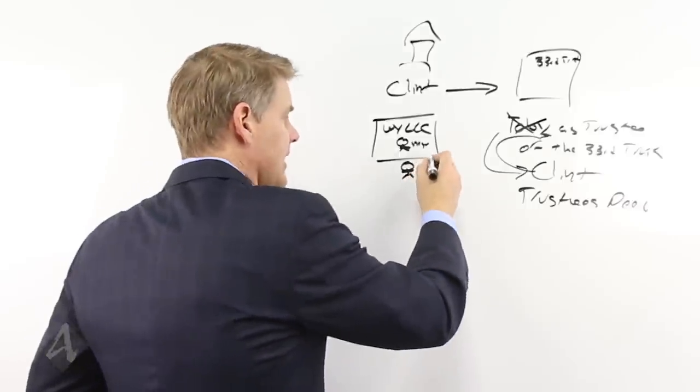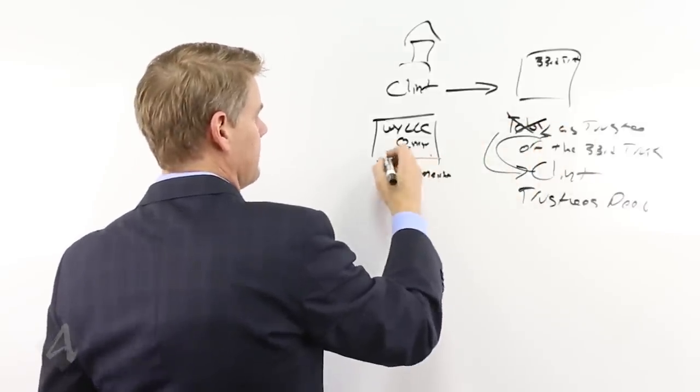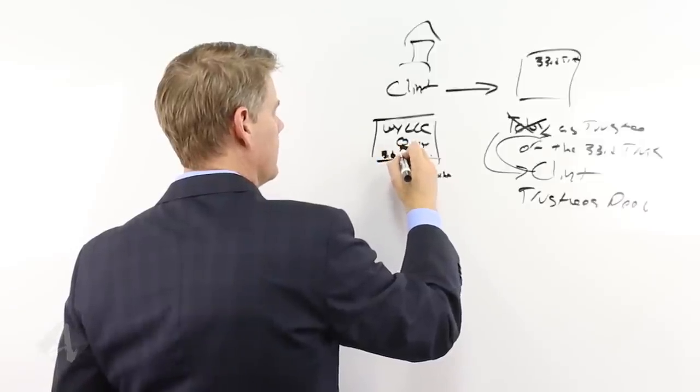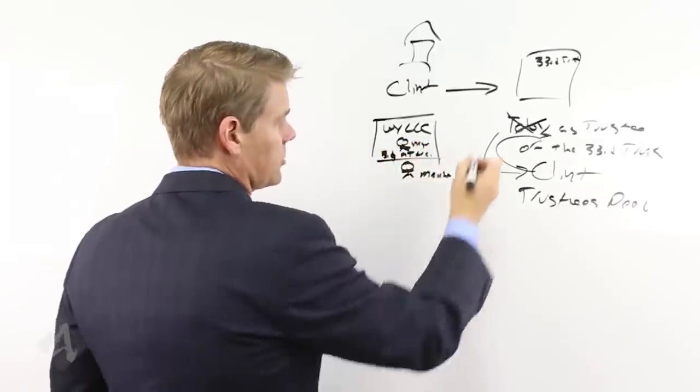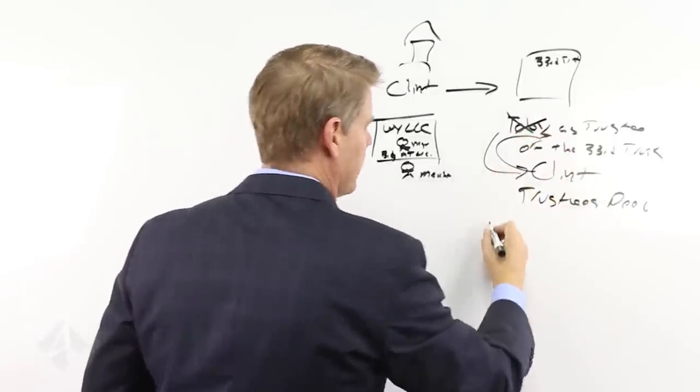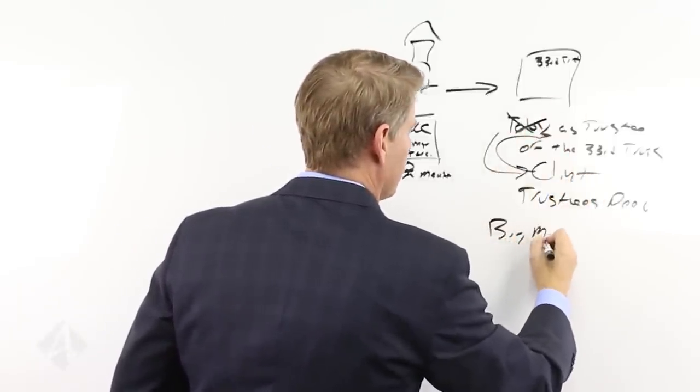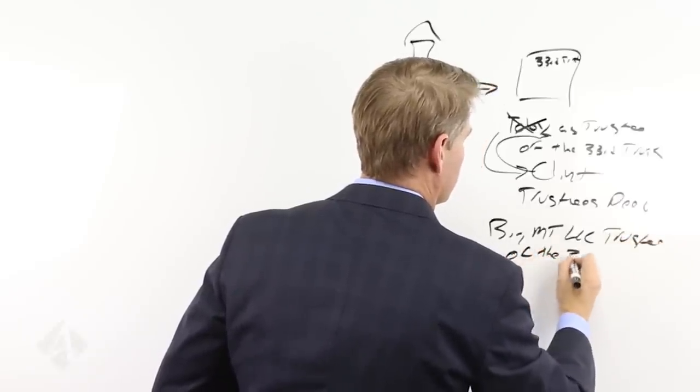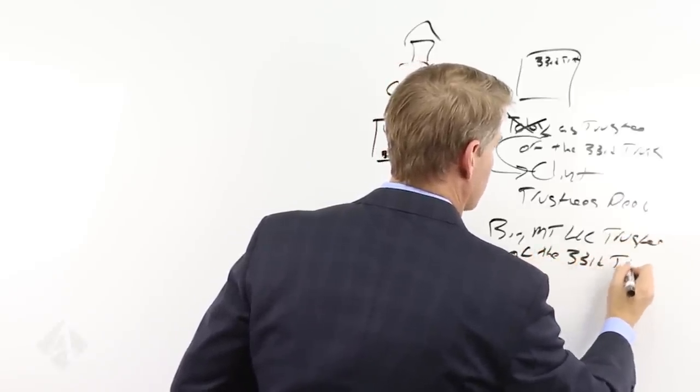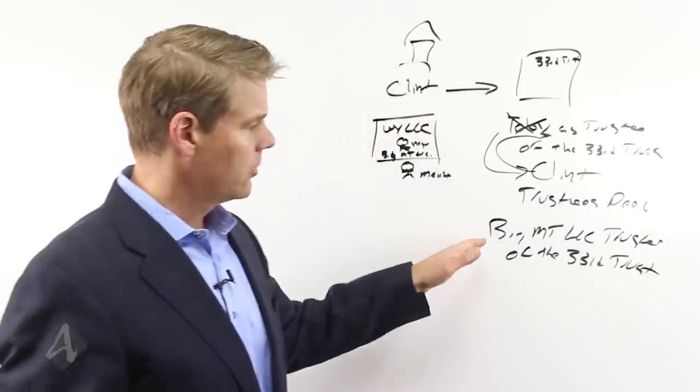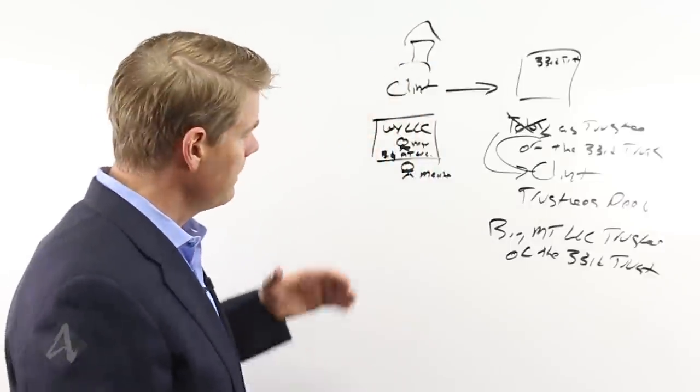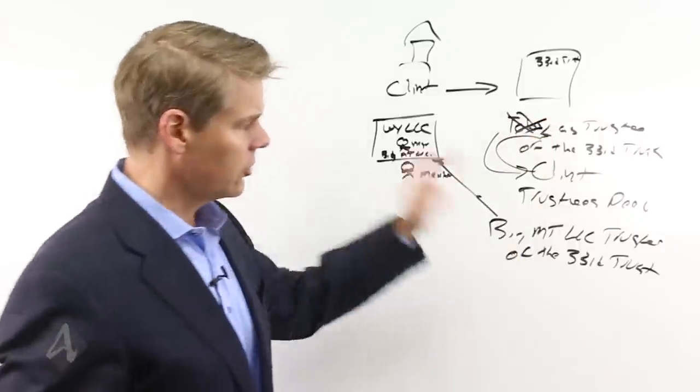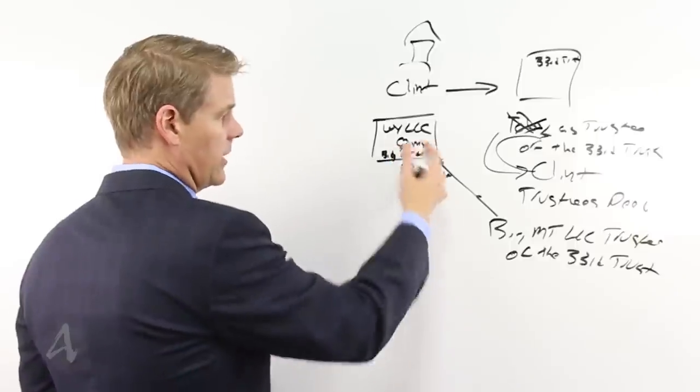You make this entity the trustee of your trust. So let's say I set up this entity and it's Big Mountain LLC. So then what I'll have when I set up my trust, I'll have Big Mountain LLC trustee of the 33rd trust. Just like that. Who's in control of this? You are. So now you are in this position. You don't have to use a Toby. You're controlling it through this one trust or this one LLC.